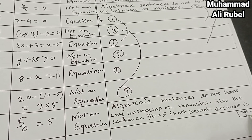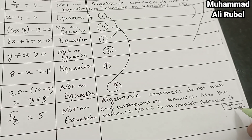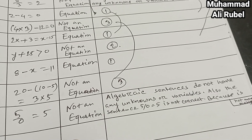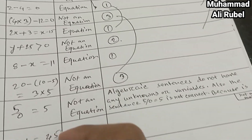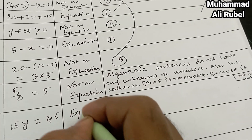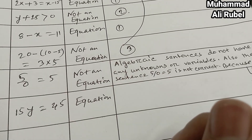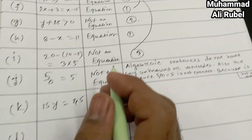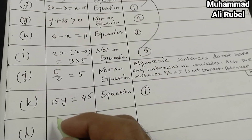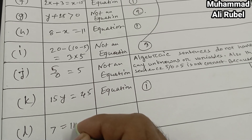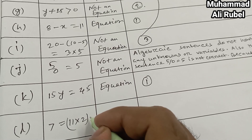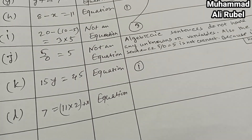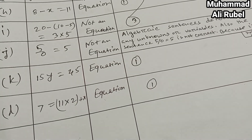Item k: 15y equal 45 — it is an equation. We write reason number one. Item l: 7 equal 11 into 2 plus x — it is an equation. We write reason number one: the left and right sides are equal for a given value of the variable.